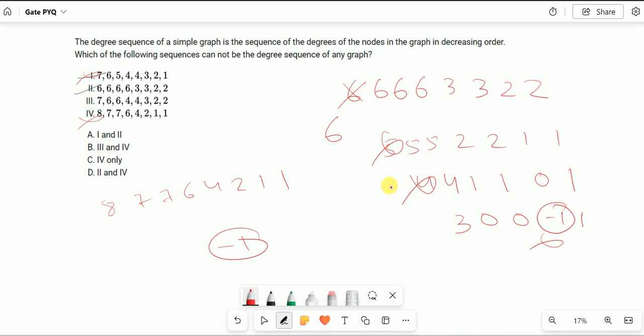So option 1 and option 4... sorry, option 2 and option 4 is the answer. Option 1 is the degree sequence of a simple graph, so 2 and 4 is the answer.